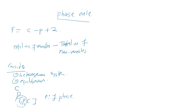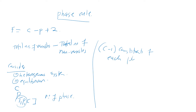In order to define the composition of each phase, it is necessary to specify the concentration of at least C minus one component constituents of each phase. The concentration of the remaining component can then be determined by the difference.